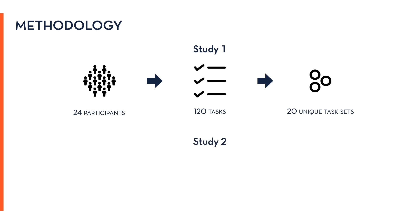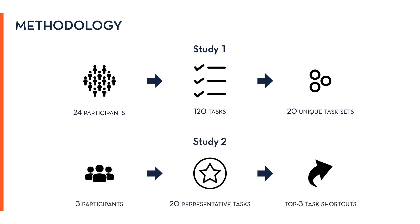In order to evaluate Savant's performance, we conducted two user studies: one formative study to identify common user tasks, and another to evaluate Savant's performance. We first conducted a formative study with 24 participants to identify classes of commonly performed smartphone tasks. We asked each participant to list five tasks they would complete on a smartphone, resulting in a total of 120 tasks, which we grouped into 20 unique sets and chose a representative task from each.